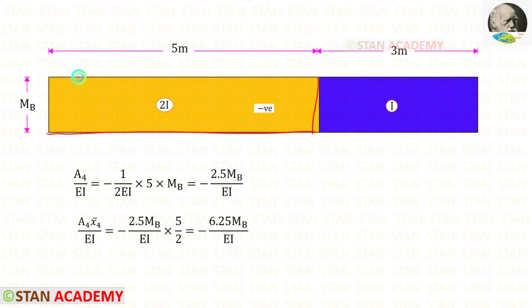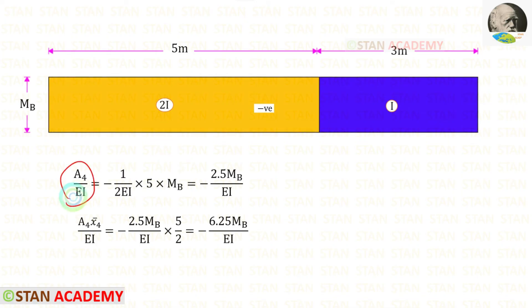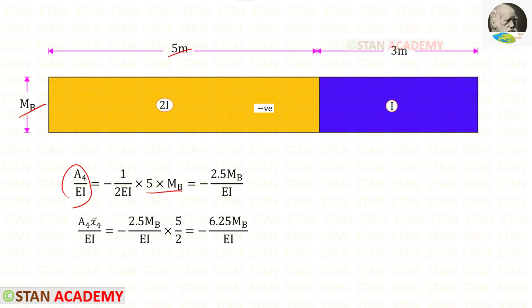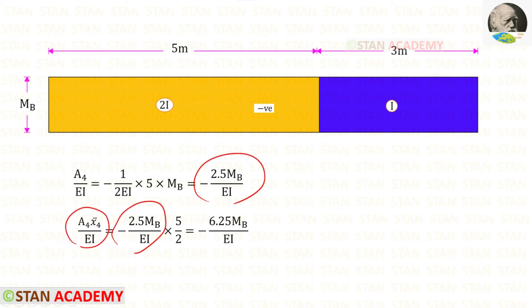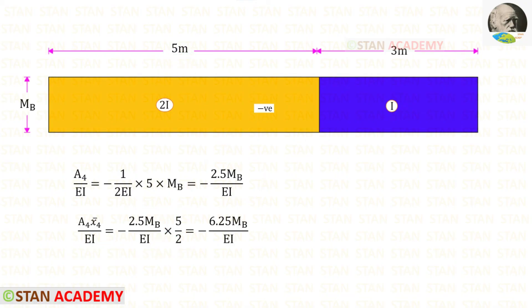Now let us take the left side rectangle and keep it as number 4. The moment of inertia here is 2I, so we use 2EI. Multiplying 5 by Mb gives the area, so Area 4 upon EI = −2.5Mb upon EI. For Area 4 × x̄4 upon EI, the centroid of the rectangle is at the center: dividing 5 by 2 gives x̄4. We get −6.25Mb upon EI.